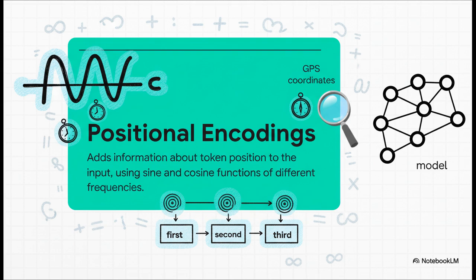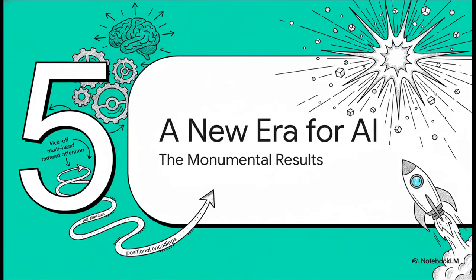So the model always knows where it is. Is it the first word, the second, the tenth, and so on. So you put all those pieces together. The parallel self-attention, the multiple attention heads, and the positional encodings to keep the order straight. And you've got the transformer. But the result wasn't just some clever new model. It was the key that unlocked an entirely new era for AI.